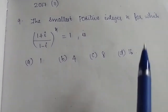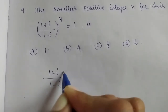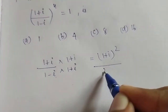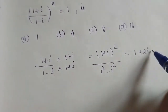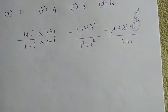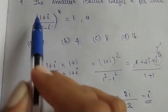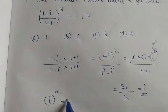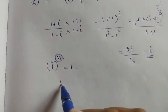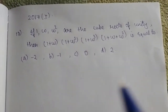Ninth question: find the smallest positive integer n such that the expression equals 1. We rationalize by multiplying 1 plus i over 1 plus i. Expanding 1 plus i squared gives 1 plus 2i plus i squared over 1 minus i squared, which equals 2i over 2, equaling i. So we need i raised to n equal to 1. Since i raised to 4 equals 1, the smallest positive integer is 4. Option B is the right answer.